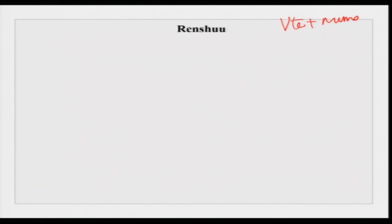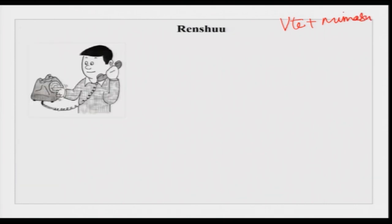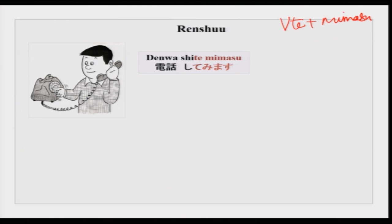We have some renshuu for you — this renshuu is verb in te-form plus mimasu, as we had in the kaiba. We have this picture here: this gentleman is on the phone going to talk to somebody. So — denwa shite mimasu. For example, you have a yakusoku, you have to go for a film, you are at the theatre waiting for your friend, the friend has not come and your other friends ask have you talked to him, is he coming? So he says denwa shite mimasu — I will just call him and see, I will do the denwa and see — that is the literal translation.